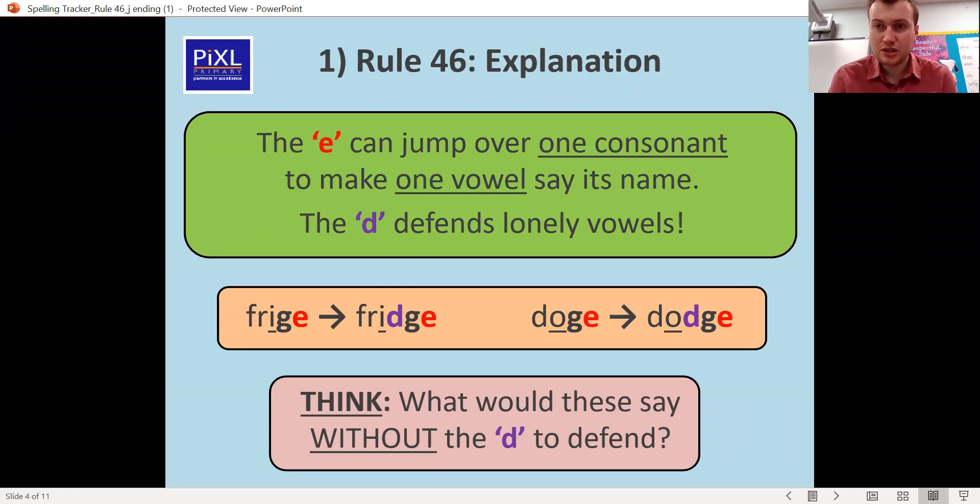So for example, fridge needs the D in there because the I is on its own. Same with dodge, the O is on its own. So if the D wasn't there you end up saying fridge and doge, but that's not the word, so you need the D in there.